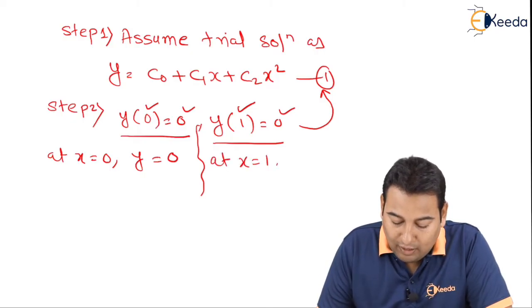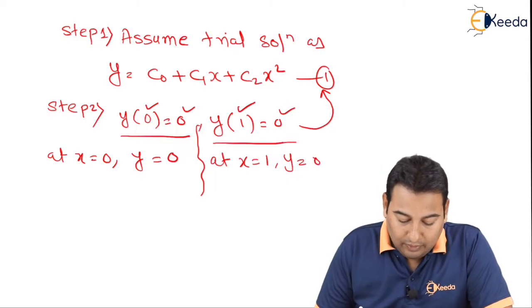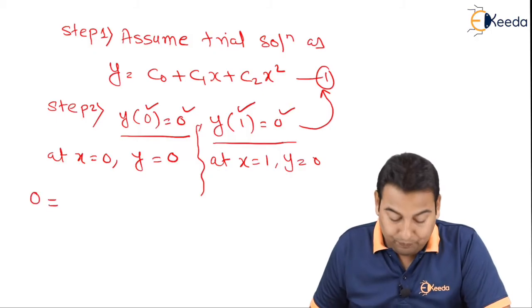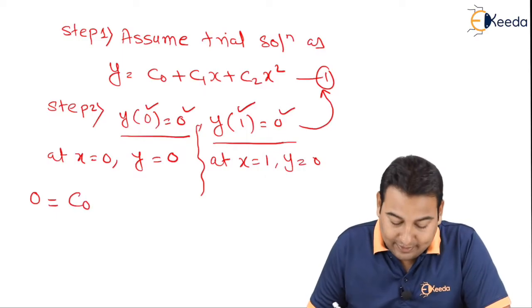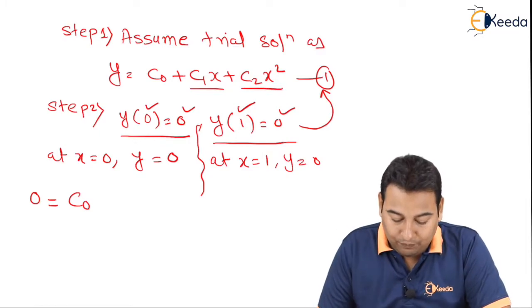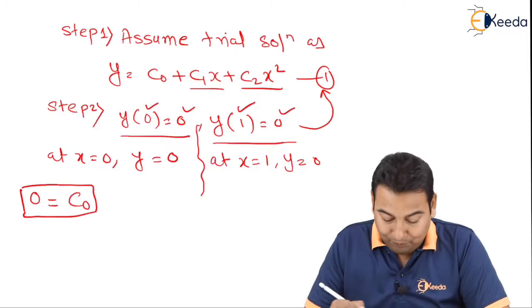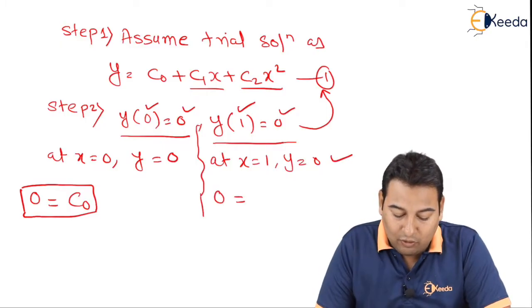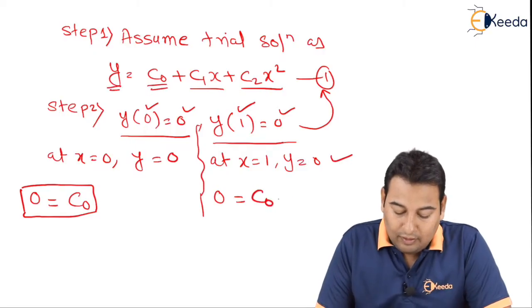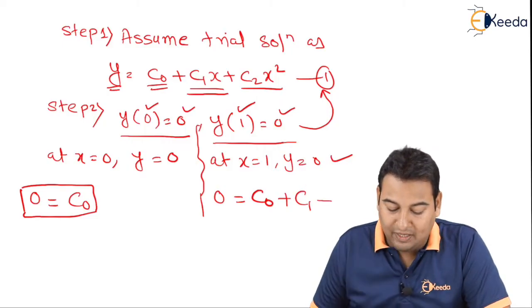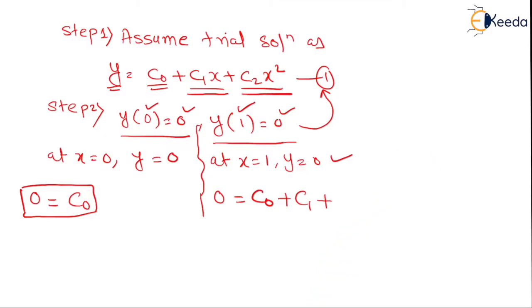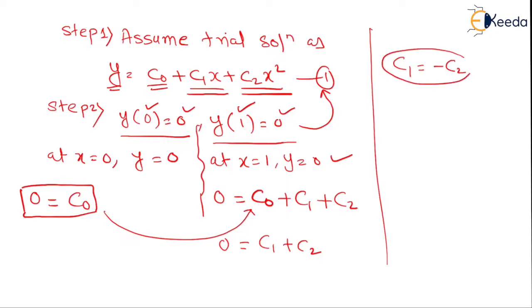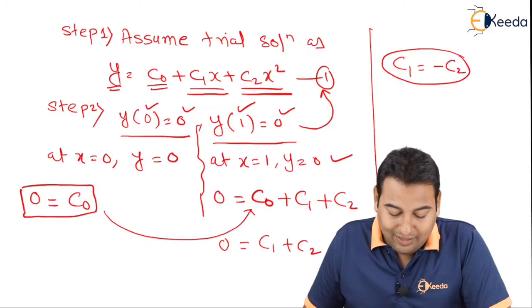At x = 0, y = 0: substituting gives 0 = c0 + c1·(0) + c2·(0)², so c0 = 0. For the second condition, x = 1, y = 0: substituting gives 0 = c0 + c1 + c2. Putting c0 = 0, we get 0 = c1 + c2, which means c1 = −c2.